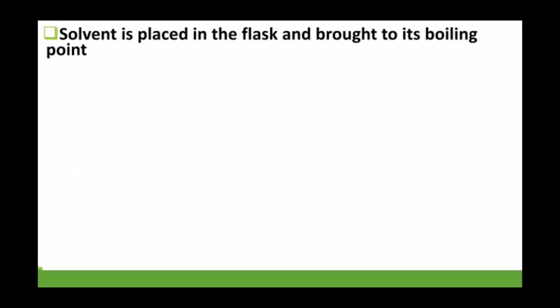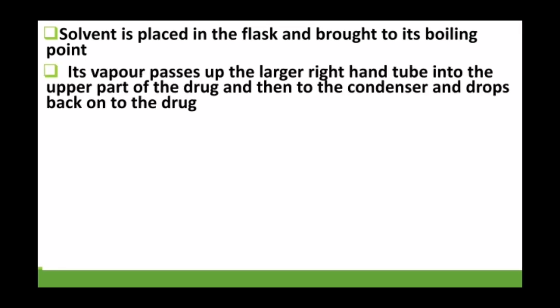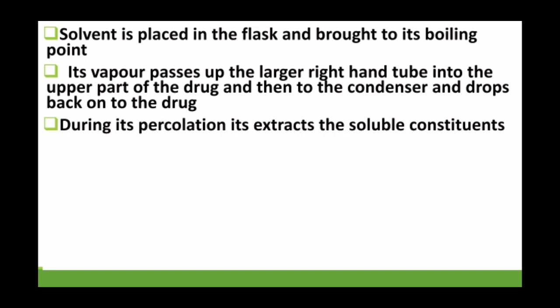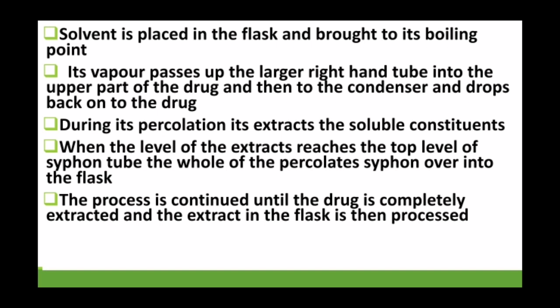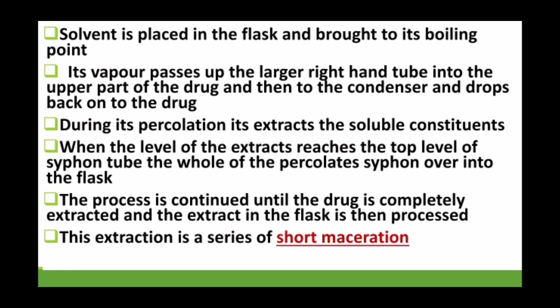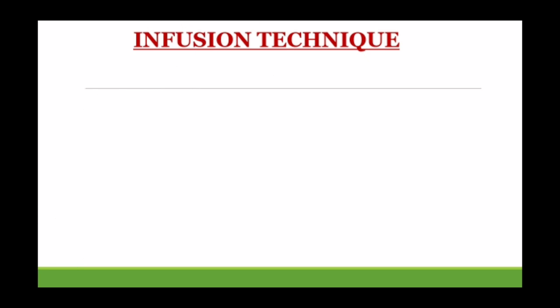After checking the complete setup, heat is applied to the solvent so vapors begin to form. The vapors pass through the condenser on top, then pass back over the drug as droplets, and the condensation process continues. During this percolation process, the soluble extract collects gradually in the flask below. This type of extraction is also called a short maceration series.